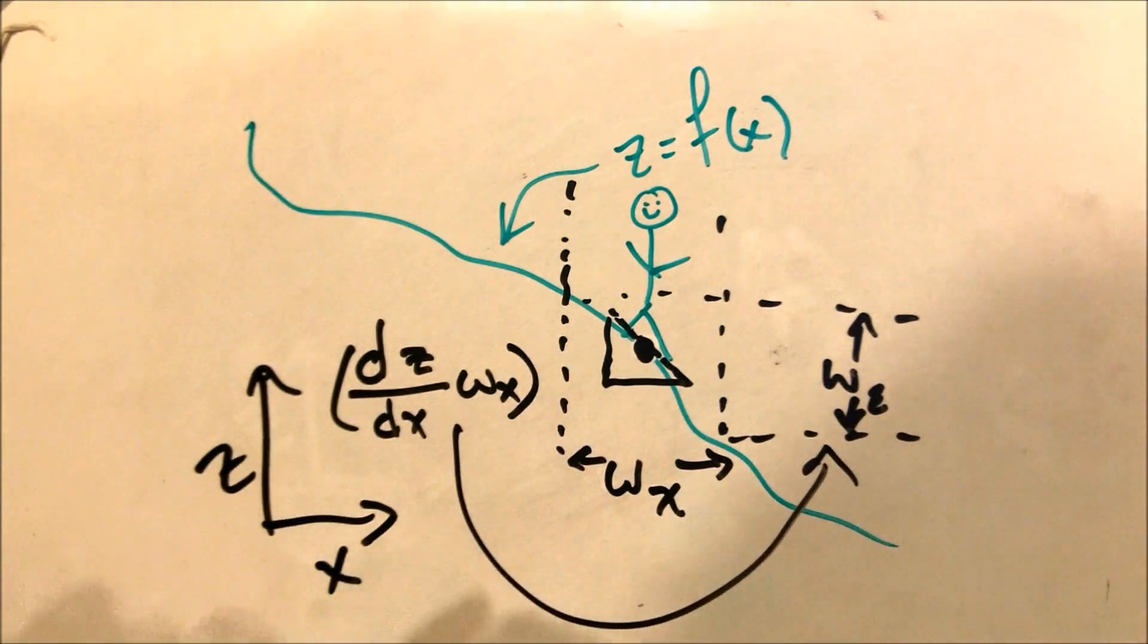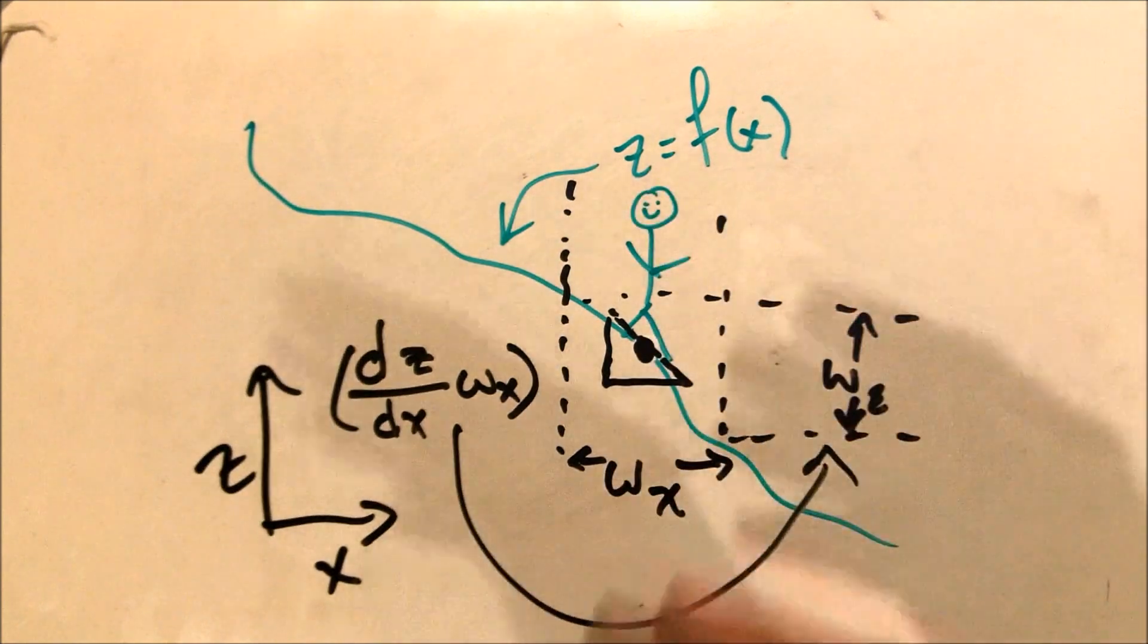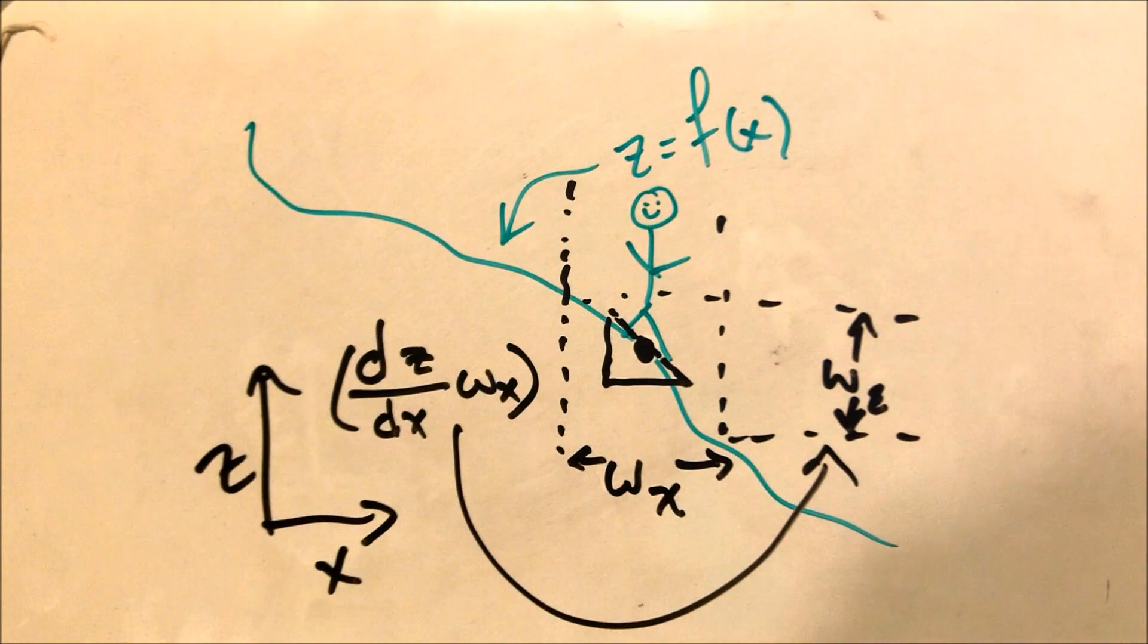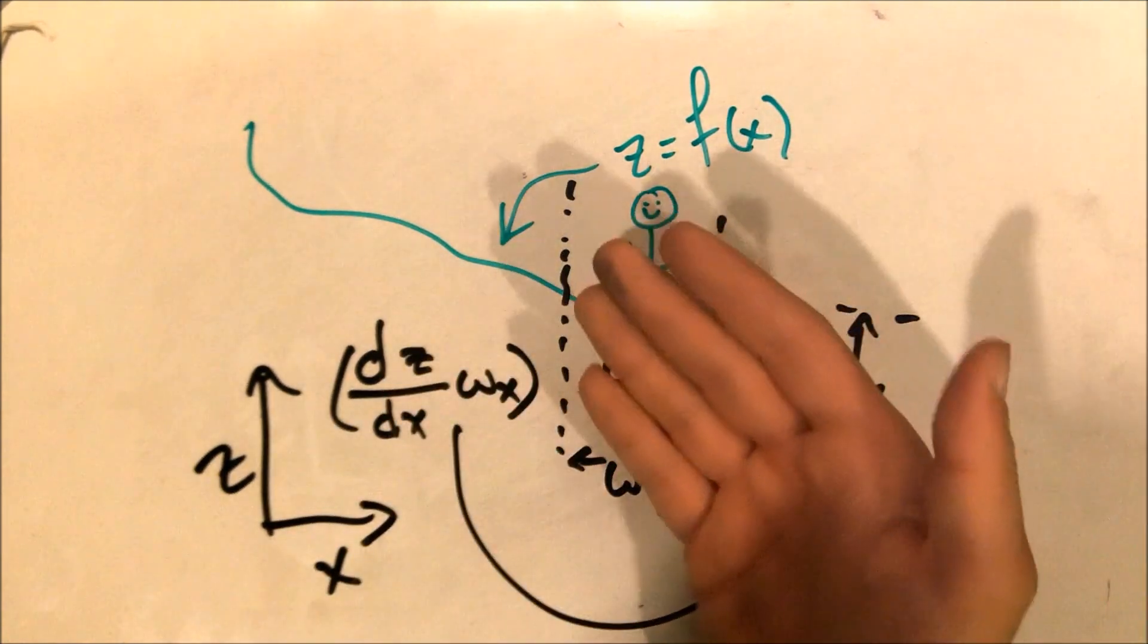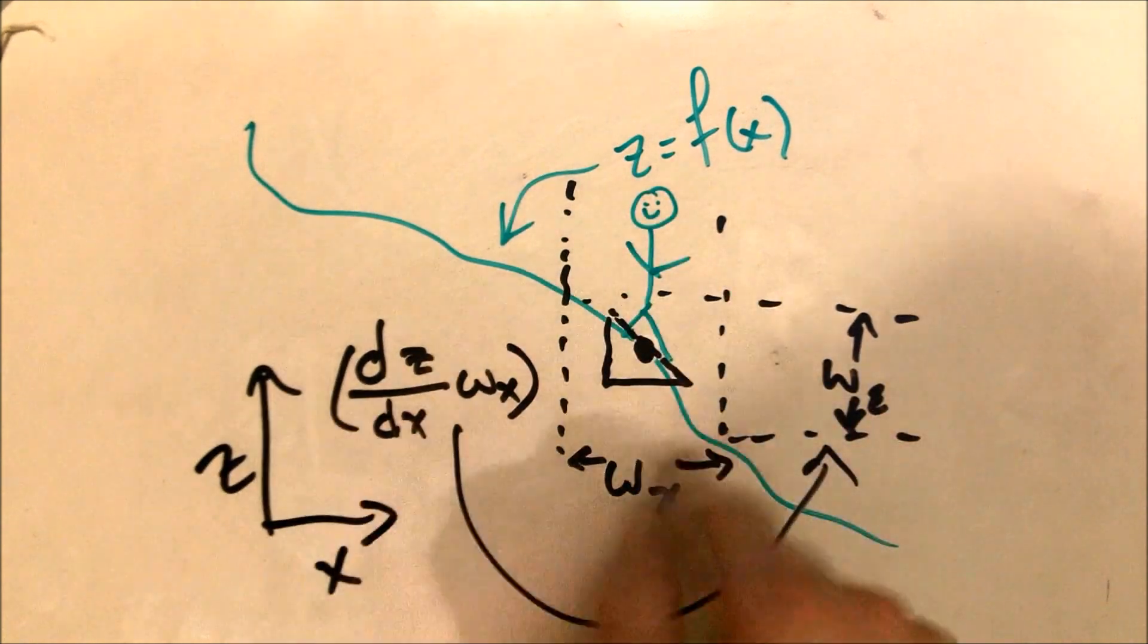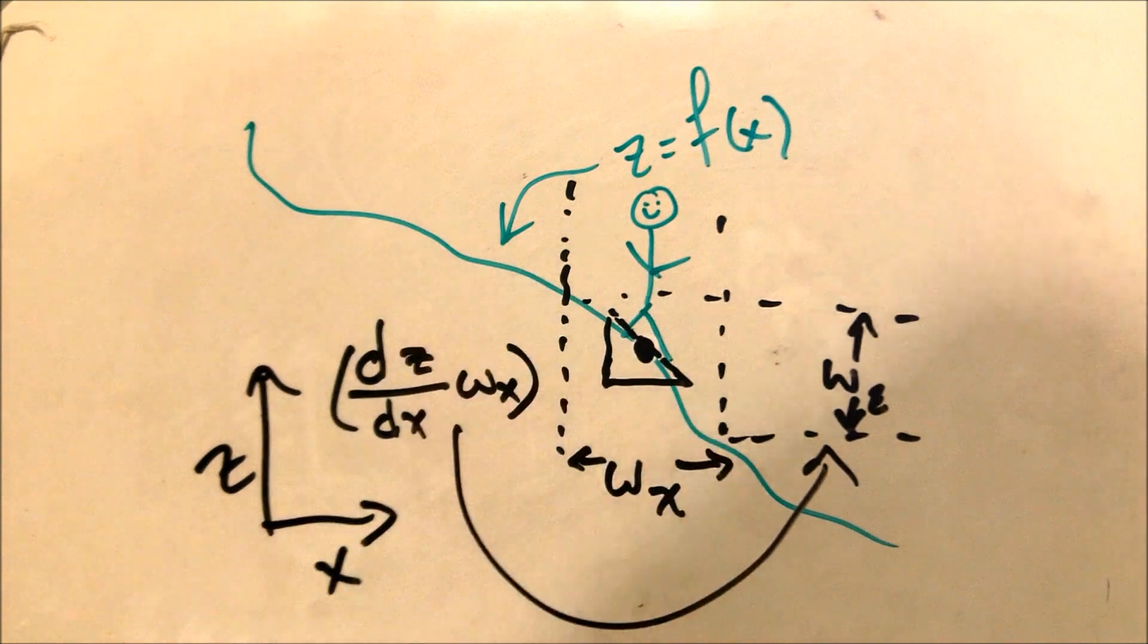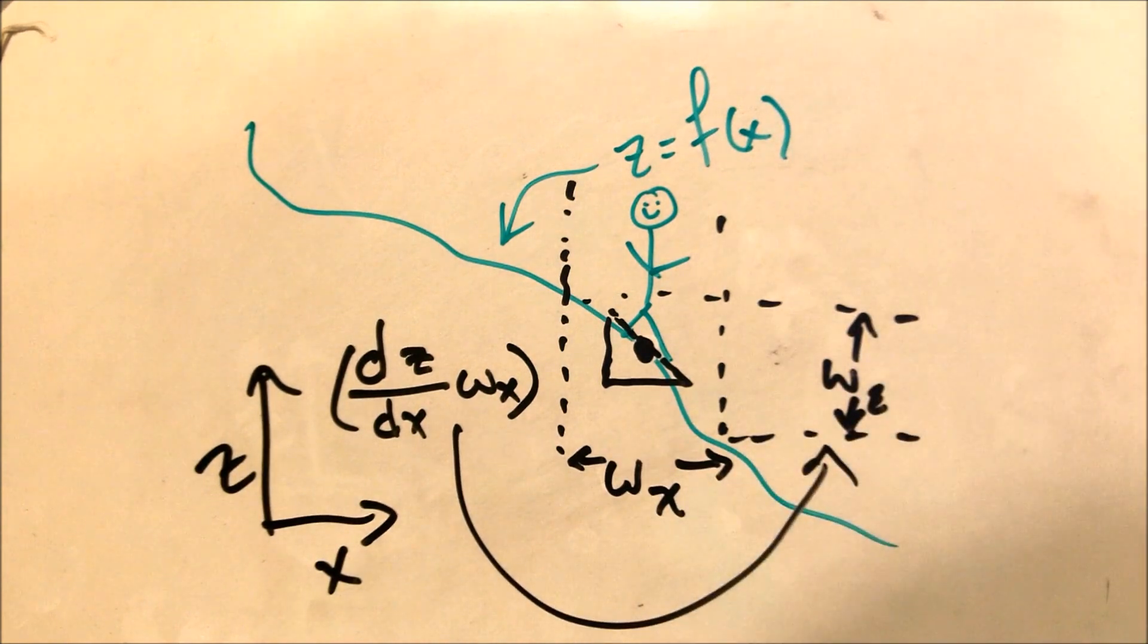Now, because this is a function of more than one variable, Z is actually a function of X and Y in this particular case, and in many other cases it might be a function of many variables. We have to take the partial derivative, because I'm holding all the other variables constant, but then changing this. And so we would find that it's actually the partial derivative of Z with respect to X if we're using more than one variable. But that's it. It's just the slope times this uncertainty gives us the output uncertainty.